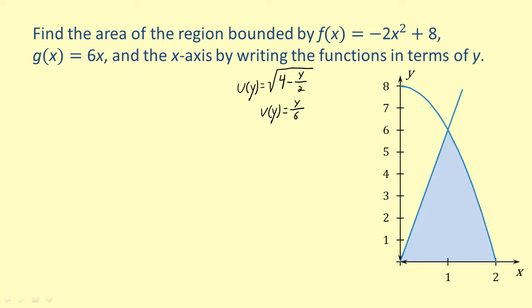So calculating the area, we get the integral from 0 to 6 of [the square root of (4 minus y over 2) minus y over 6] dy. Using the difference rule, we can rewrite this as the difference of two integrals.